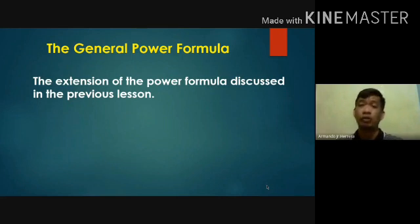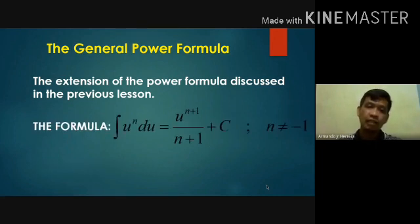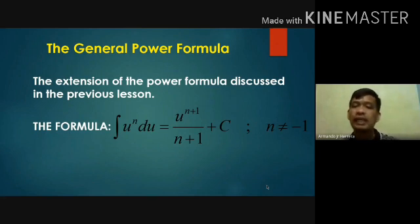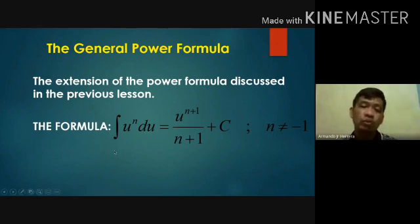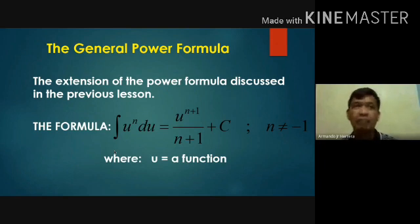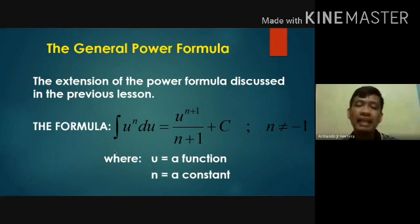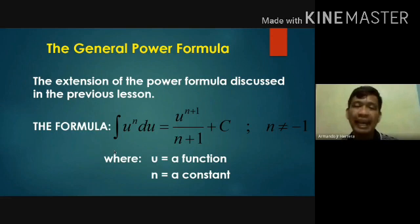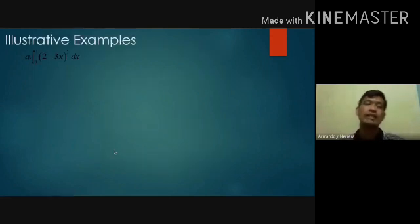The general power formula is just the extension of the power formula discussed previously. The formula is: the integral of u to the n du is equal to u to the n+1 over n+1 plus C, such that n must not be equal to negative 1. Here, u is any function — it can be algebraic or transcendental — provided n is a constant.